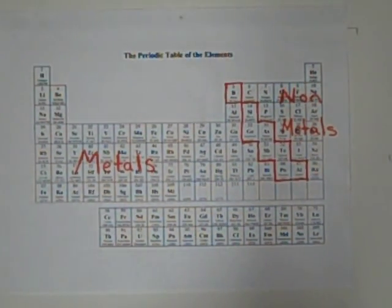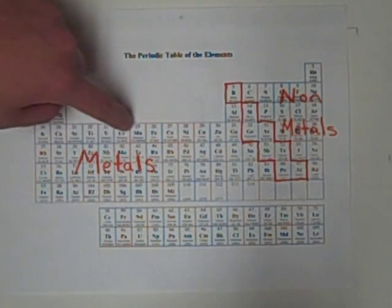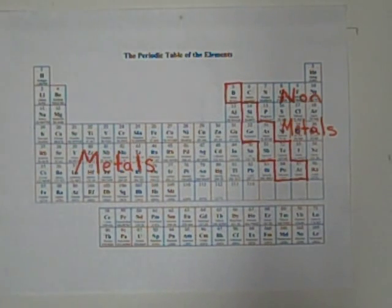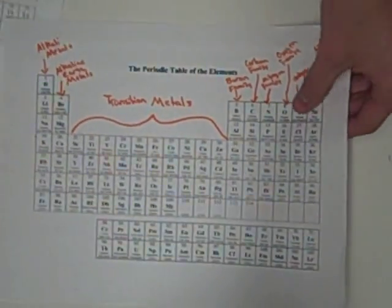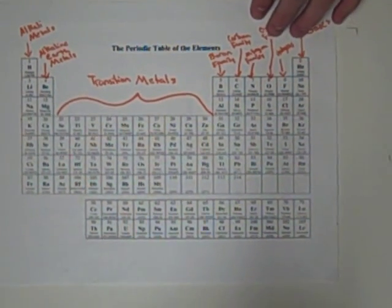Metals are the largest majority of elements in the periodic table. They are good conductors of electricity and heat. All metals are solids at room temperature except for mercury. The metals in groups three through twelve are called transition metals. These elements form a bridge between the left and right sides of the table.